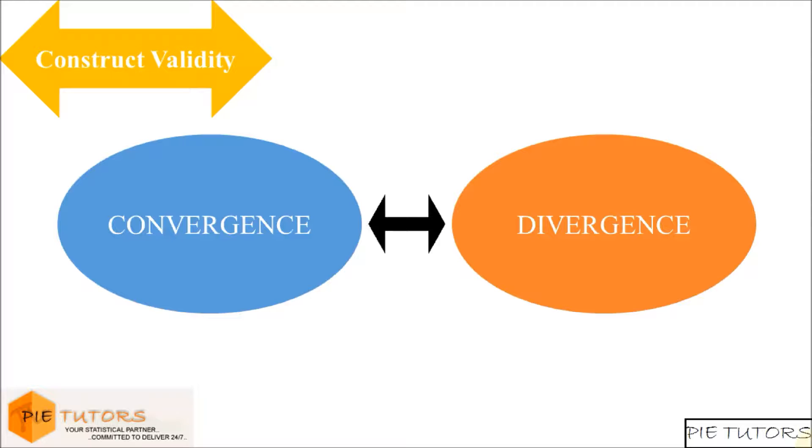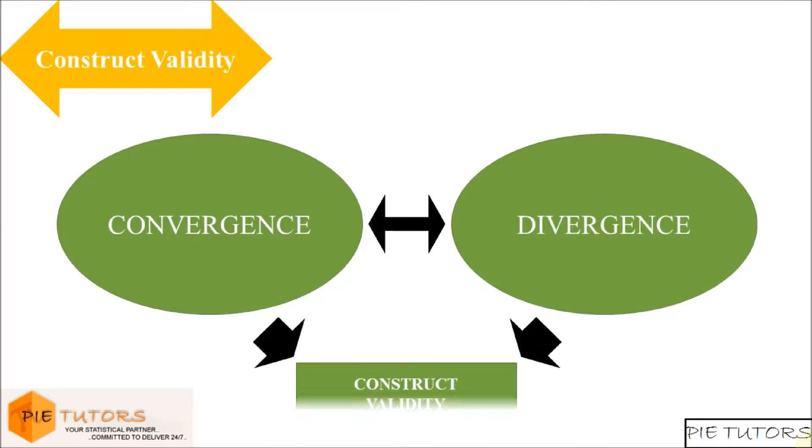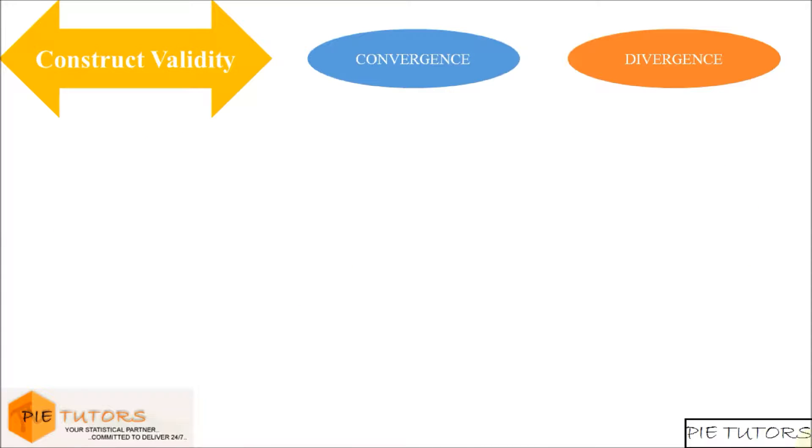This means that if you can demonstrate that you have evidence for both convergent and discriminate validity, then only, by definition, you have demonstrated that you have evidence for construct validity. Let us now look at how to establish convergent and discriminate validity.